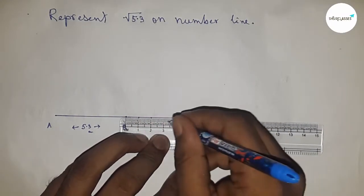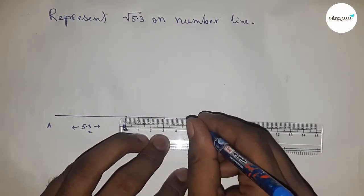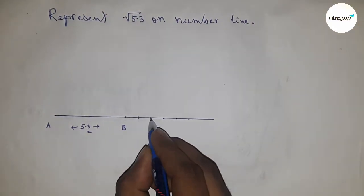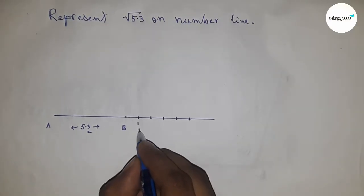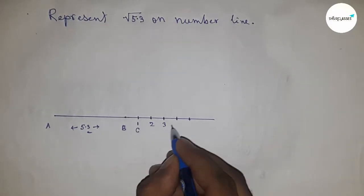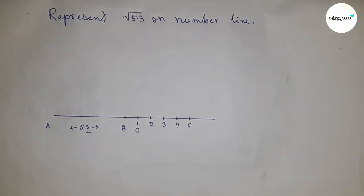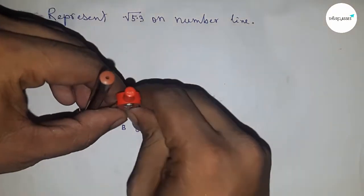Marking all the numbers on the line. This is 1, 2, 3, 4, 5, then 1 C point 2, 3, 4, and 5. On next, bisecting the line AC.